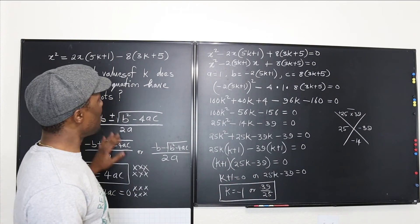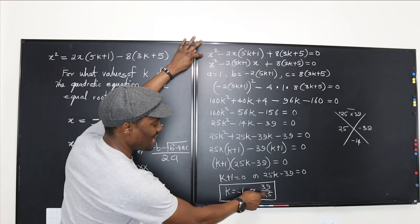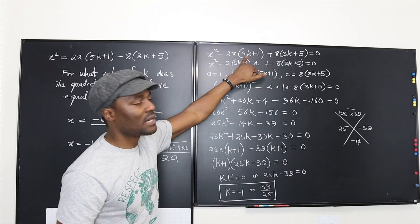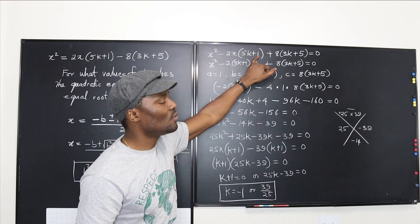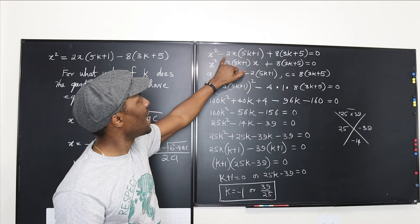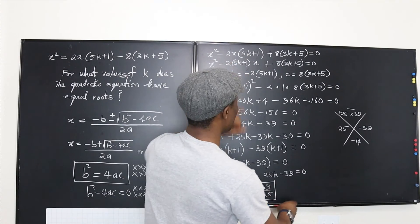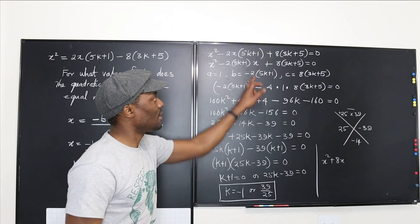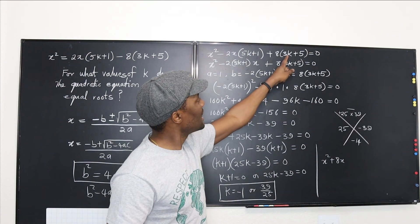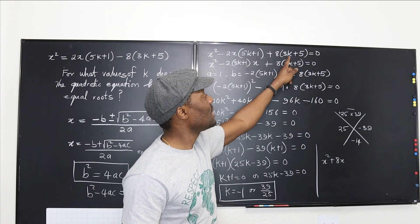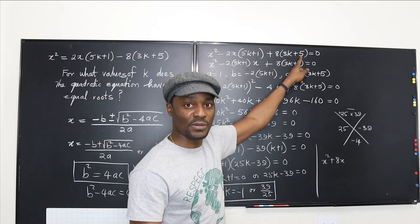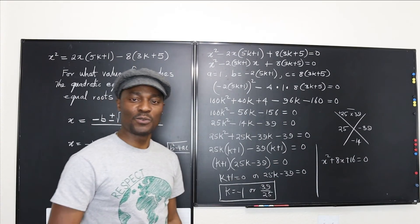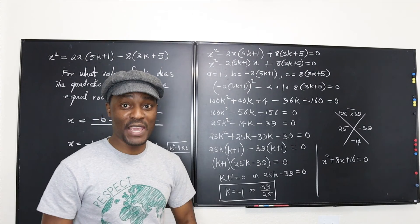Let's go back to the original question and verify using k = −1. If I put negative one in, 5 times negative one is negative five; negative five plus one is negative four; negative four times negative two is positive eight. And for the constant: 3 times negative one is negative three; negative three plus five is positive two; two times eight is 16. So the original quadratic equation with k = −1 becomes x² + 8x + 16 = 0.